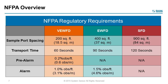In standard fire detection, the sample port covers 900 square feet — 30 by 30. If you're designing for early warning fire detection, you're looking at 400 square feet per sample port or detector. For very early warning, it's 200 square feet of coverage per port or detector. An additional consideration for air sampling technology is transport time. Standard fire detection has a 120-second transport time, early warning 90 seconds, and very early warning 60 seconds.